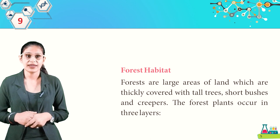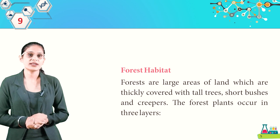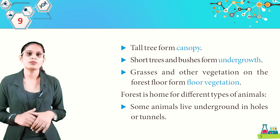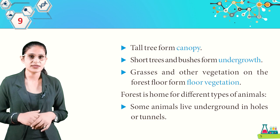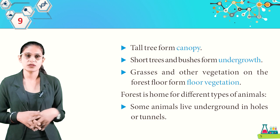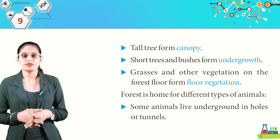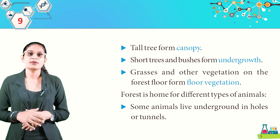Now we have forest habitat. Forests are large areas of land thickly covered with tall trees, short bushes, and creepers. Forest plants occur in three layers: tall trees form the canopy, short trees and bushes form the undergrowth, and other vegetation on the forest floor forms the floor vegetation. Some animals live underground in holes or tunnels, as seen in this picture of a tropical rainforest.